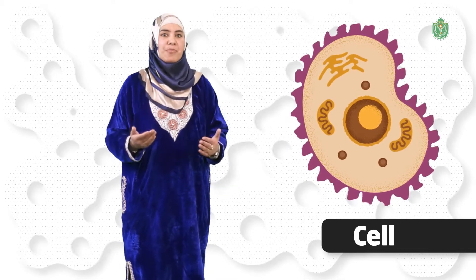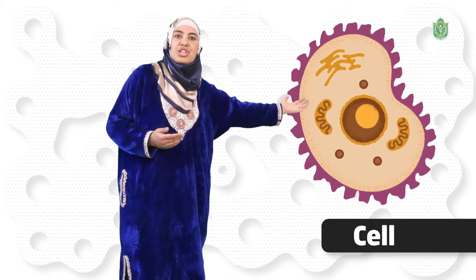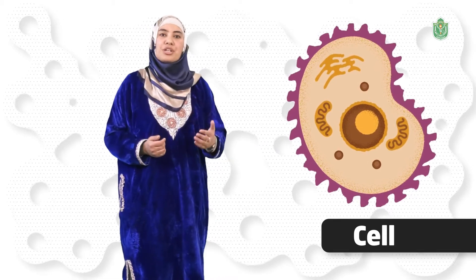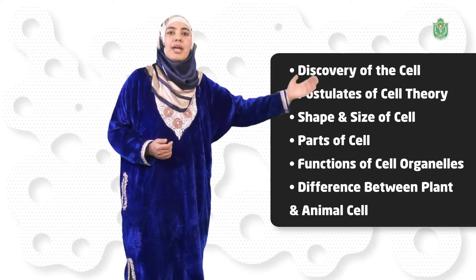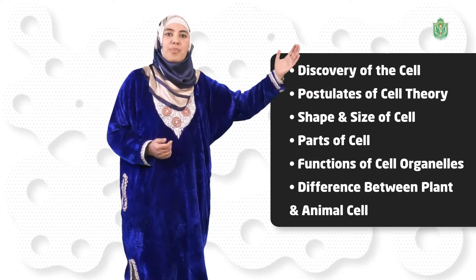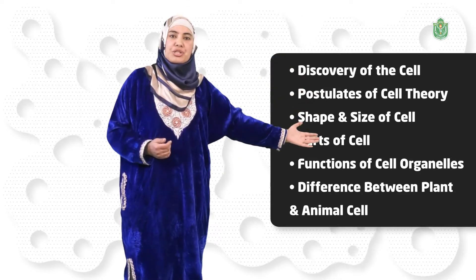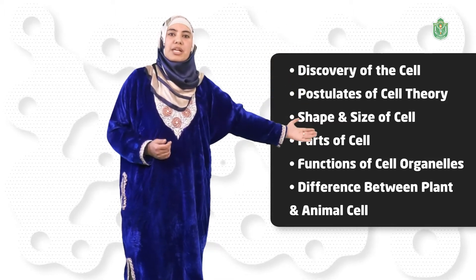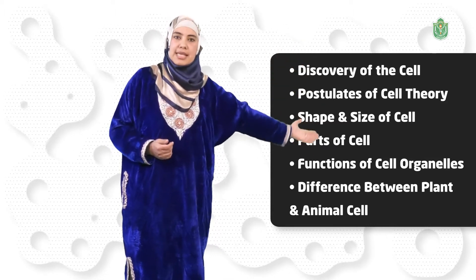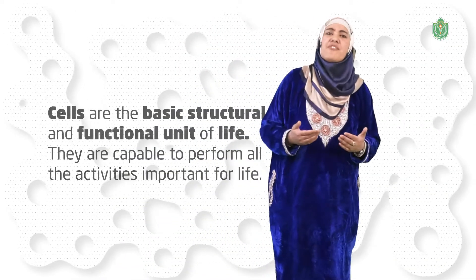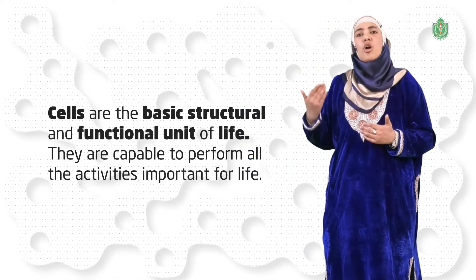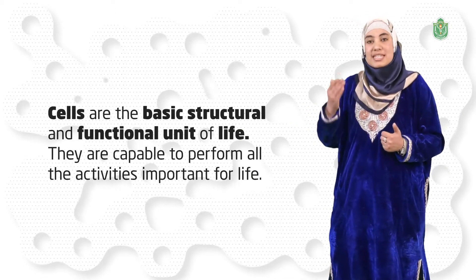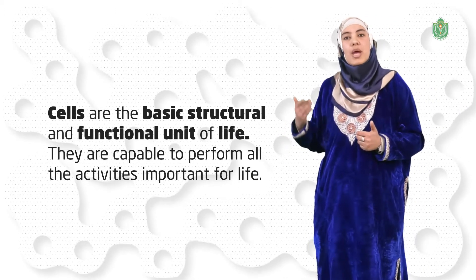Today our topic is cell structure and function. In this chapter, we are going to study about the discovery of the cell, postulates of cell theory, shape and size, parts of cell, functions of cell organelles, difference between plant cell and animal cell. Cells are the basic structural and functional unit of life, capable of performing all the activities important for life. Cell is the basic constituent of our body.